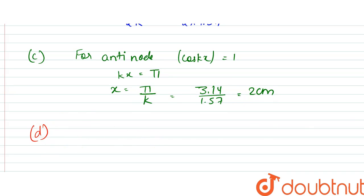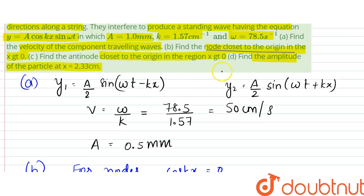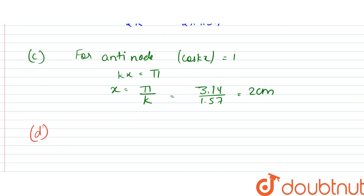Now, D. Find the amplitude of the particle at x equals 2.33 centimeters. So, amplitude of the particle at x equals 2.33. So, amplitude is, A' is equal to A cos kx. Why?